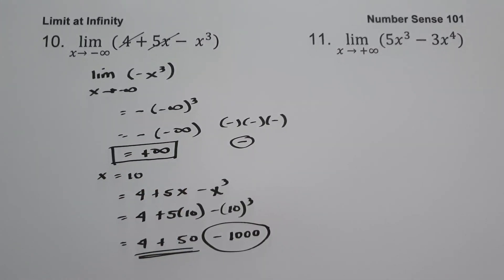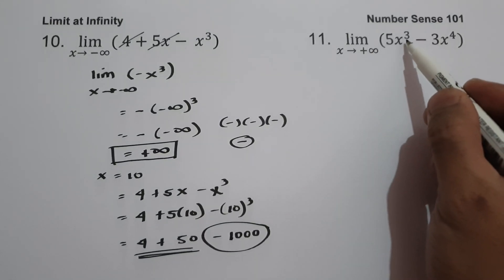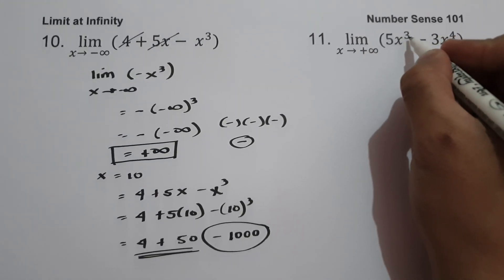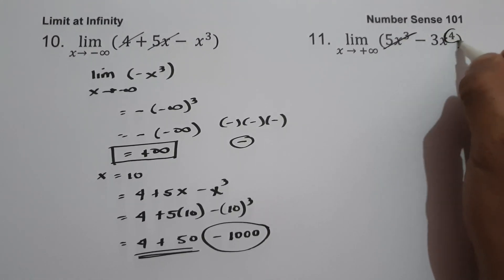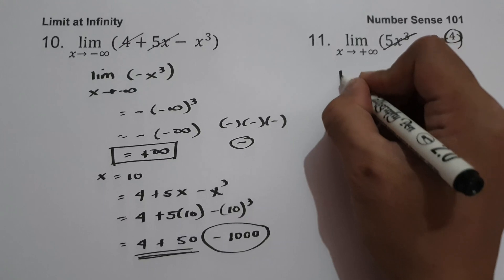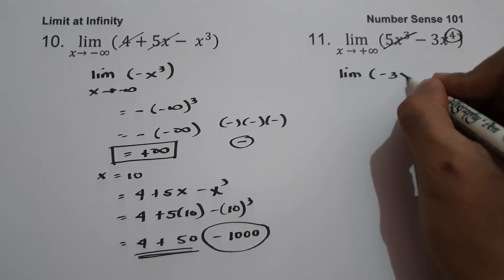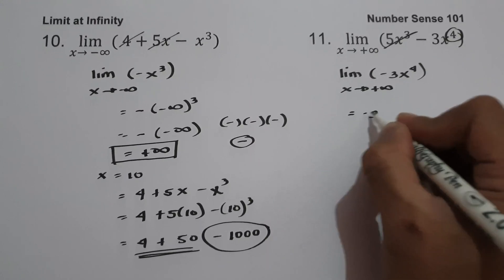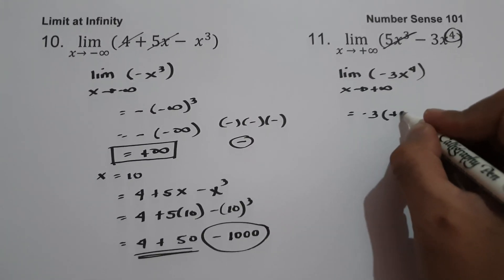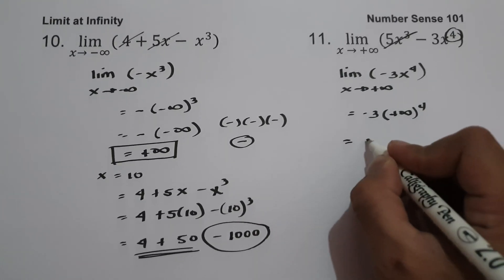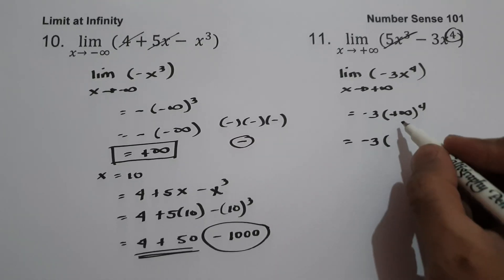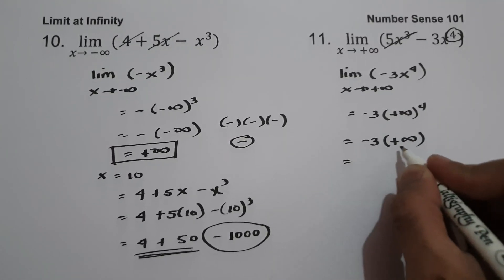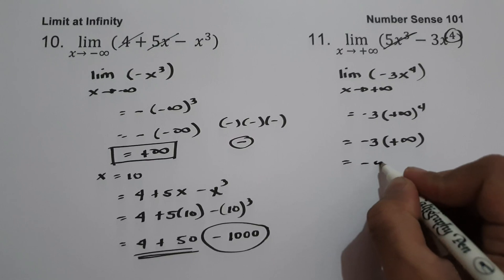On example number 11, the limit of 5x raised to 3 minus 3x raised to 4 as x approaches positive infinity. We disregard 5x cubed because the exponent of negative 3x is 4, which is higher. So this becomes the limit of negative 3x raised to 4 as x approaches positive infinity: negative 3 times positive infinity raised to 4 is positive infinity, and negative 3 times positive infinity gives negative infinity.